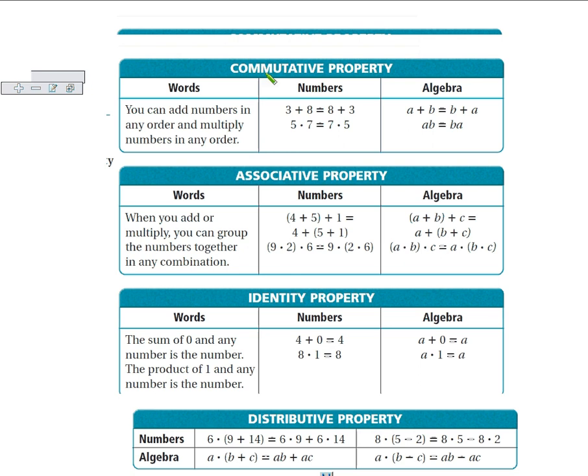We talked about the commutative property and that has to do with the order in which we either add numbers together or multiply them. 3 plus 8 is the same as 8 plus 3, just switching the order.